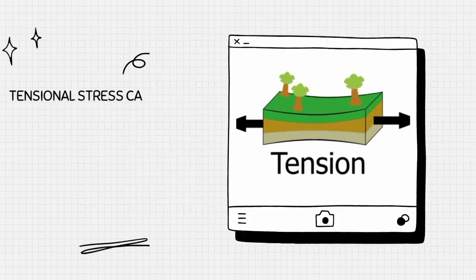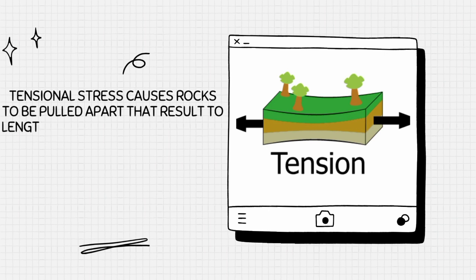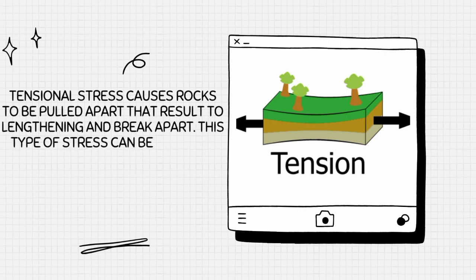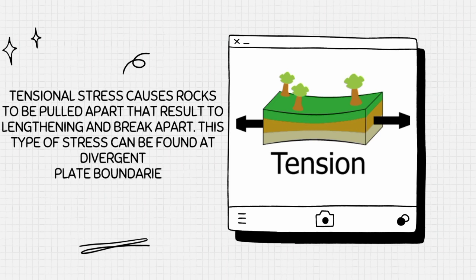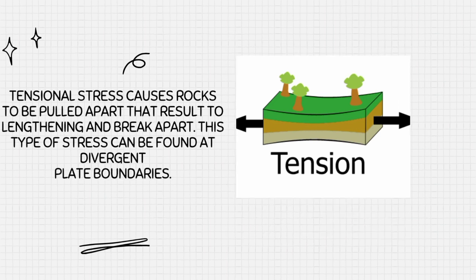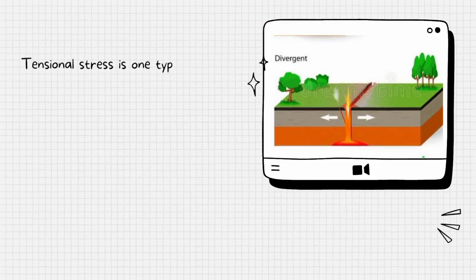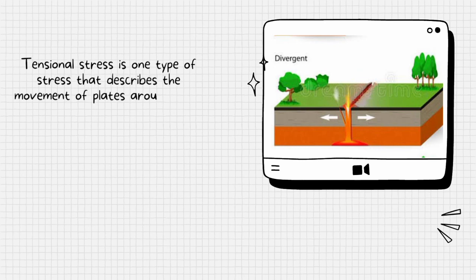Tensional stress causes rocks to be pulled apart, resulting in lengthening and breaking apart. This type of stress can be found at divergent plate boundaries. Tensional stress is one type of stress that describes the movement of plates around fault lines.